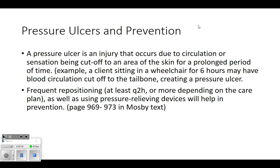The biggest prevention strategy is frequent repositioning - at least every two hours, more if the care plan says so. There are also pressure-relieving devices like cradles, pillows, trochanter rolls, sheepskin elbow protectors. Air beds are big now too - people who are high risk use mattresses filled with air, and you'll see those on placement.